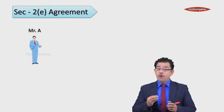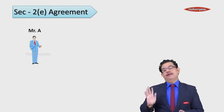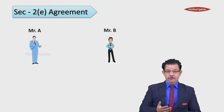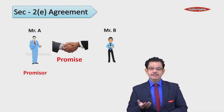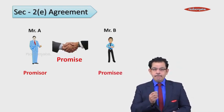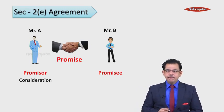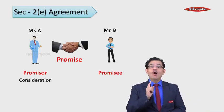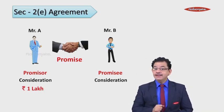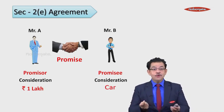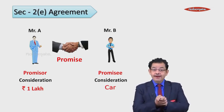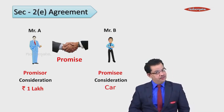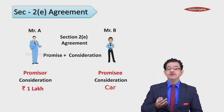Once the first ladder is cleared, we go to ladder two — Section 2e: what is an agreement? An agreement is nothing but promise plus consideration. In our example, Mr. A will sell the car and Mr. B will buy it for one lakh rupees — there is a promise. Now, what is the consideration for Mr. A? He gets one lakh rupees. What is the consideration for Mr. B? He gets the car. So when there is consideration for both parties in a promise, it becomes an agreement under Section 2e.